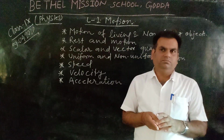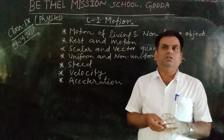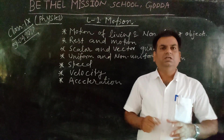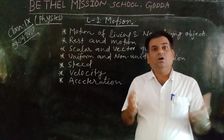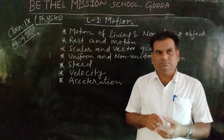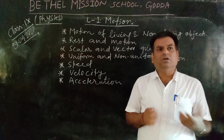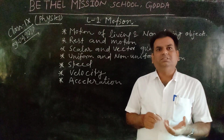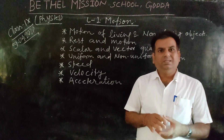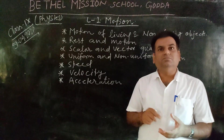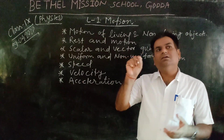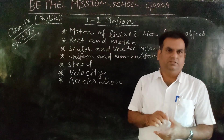Circular motion means the motion of an object on a circular path. For example, the needle of a clock — it is circular motion because it follows a circular path and the object moves along that path.